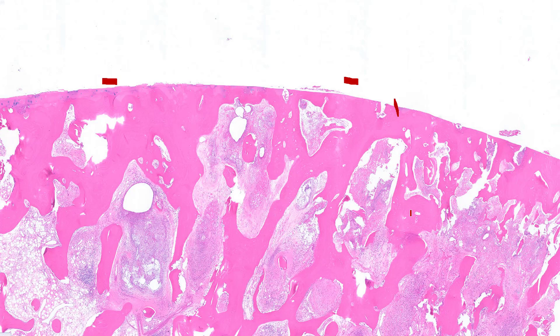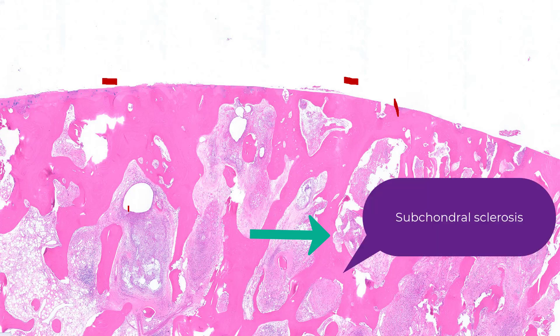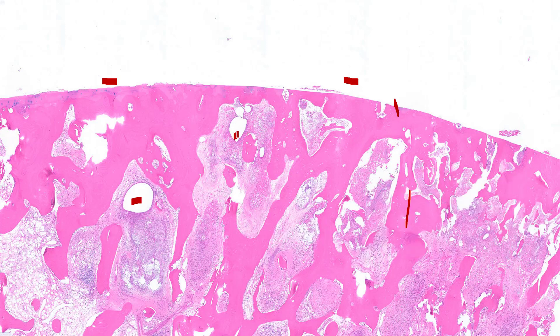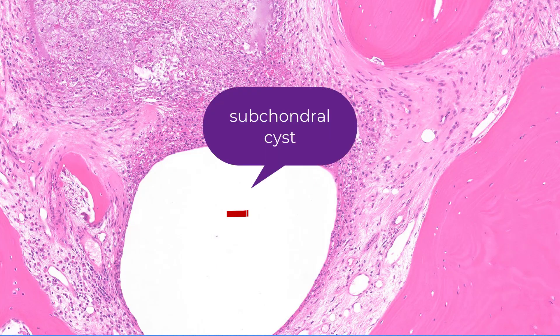The bone immediately under that eburnation is thickened, and this is referred to as subchondral sclerosis. Also notice that there are cysts under that articular cartilage. Notice that the cartilage is completely taken off. A number of osteocyte nuclei here have completely dropped out — that could be an artifact, but in this case it is osteocyte dropout secondary to the severe osteoarthritis.